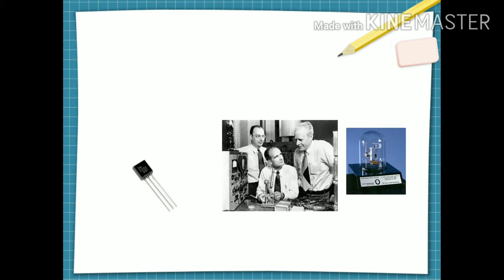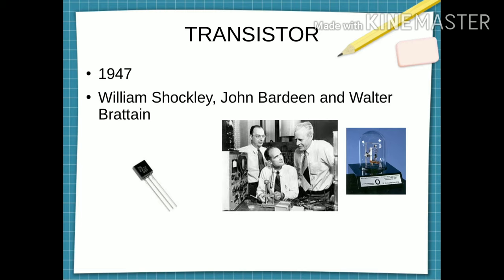Then an invention came by which changed the entire world. It is a three-terminal device called transistor. This invention was done by three people in 1947: William Shockley, John Bardeen and Walter Bretain.